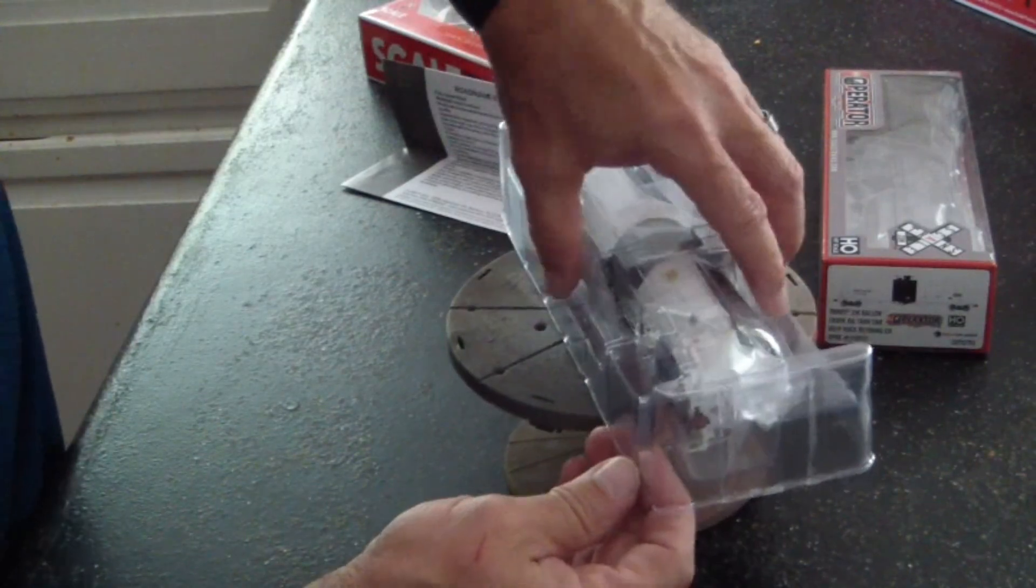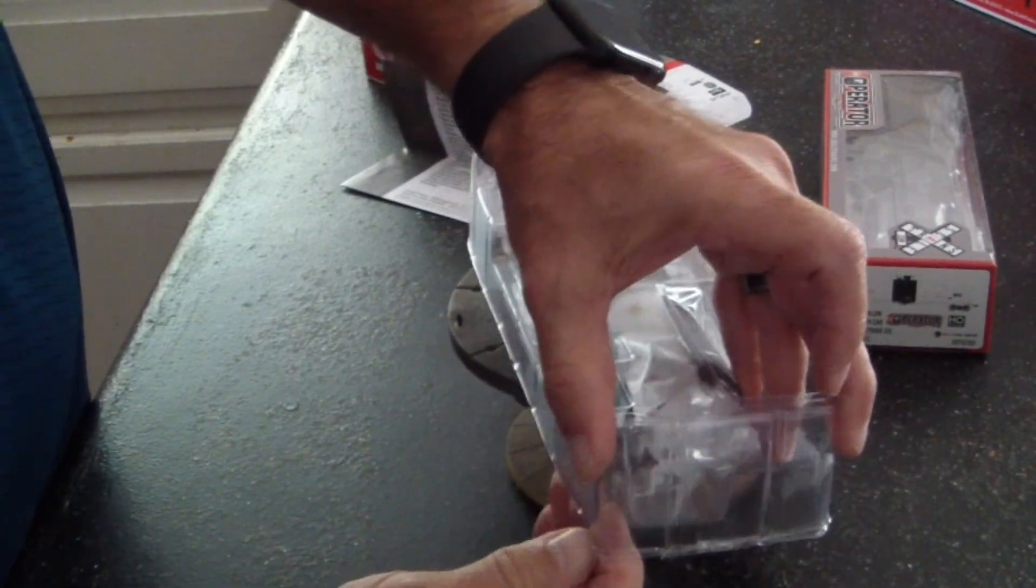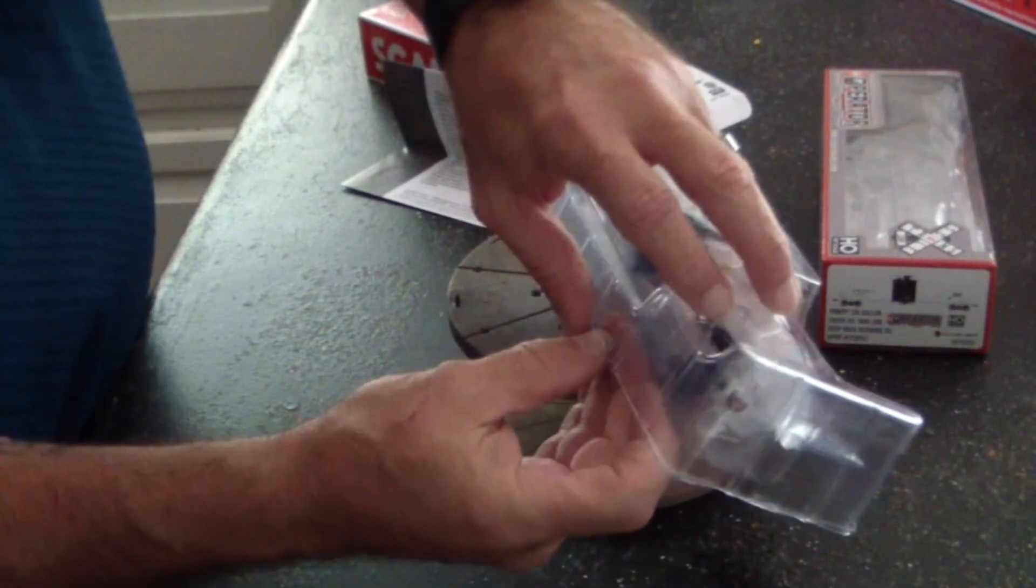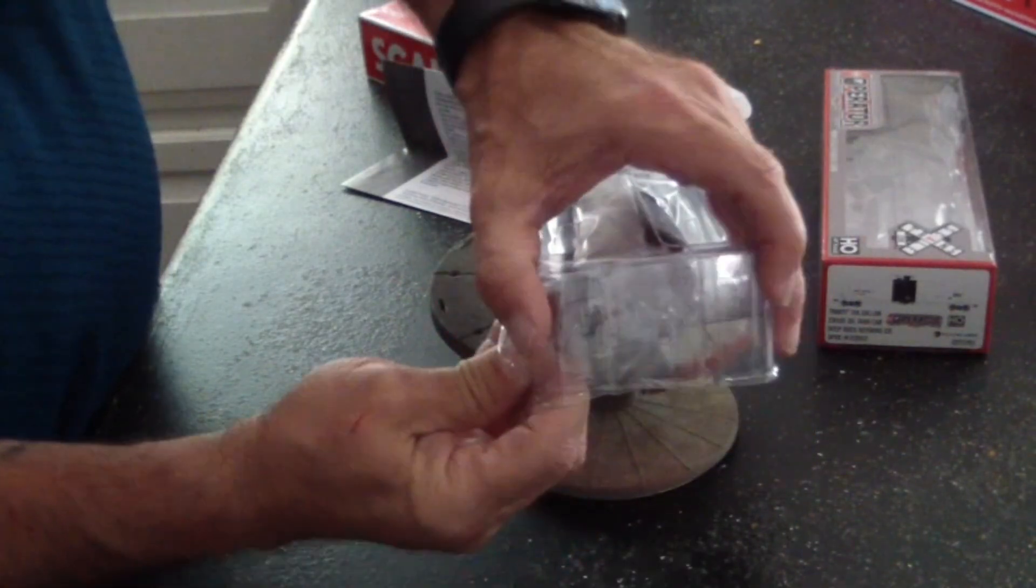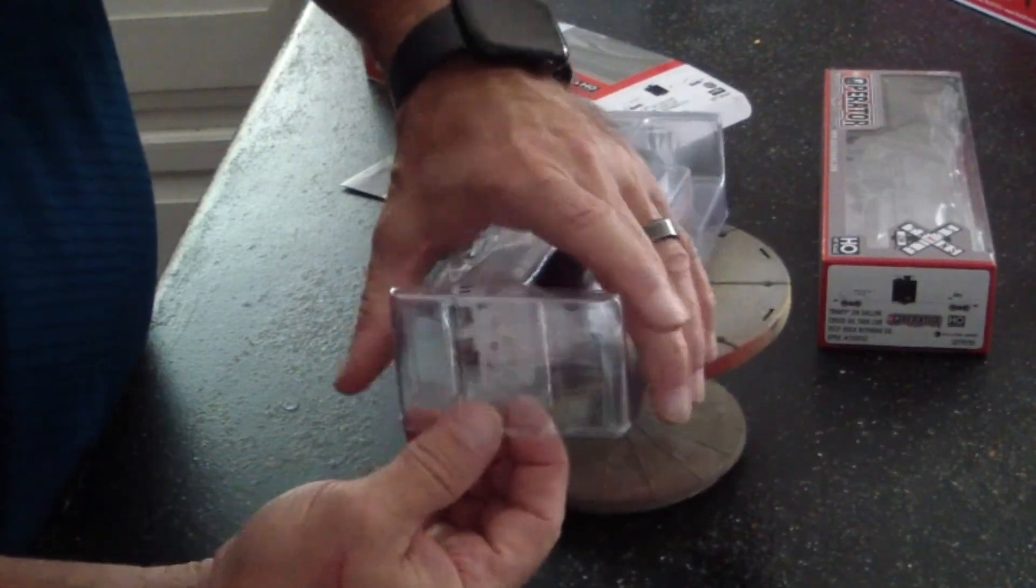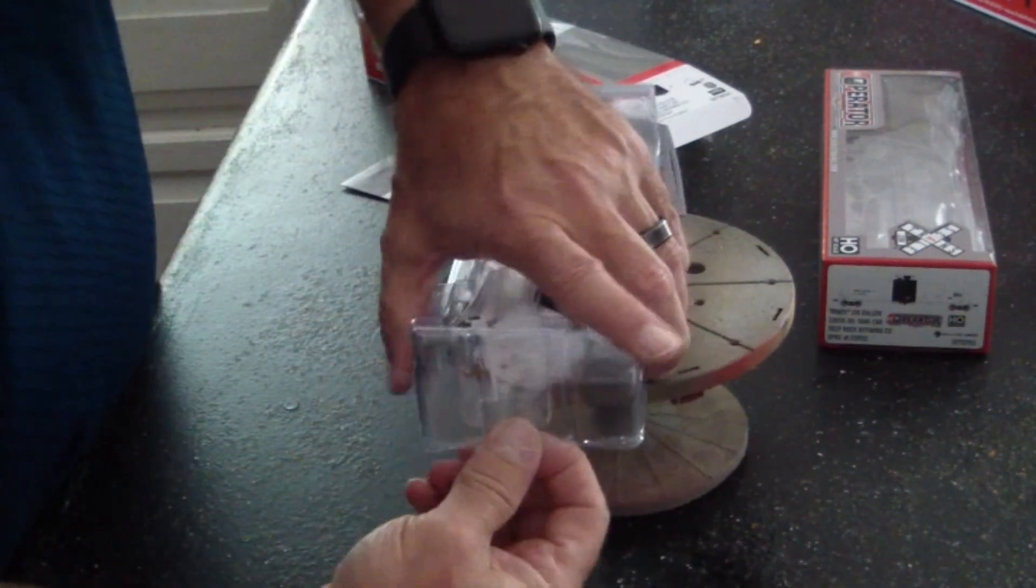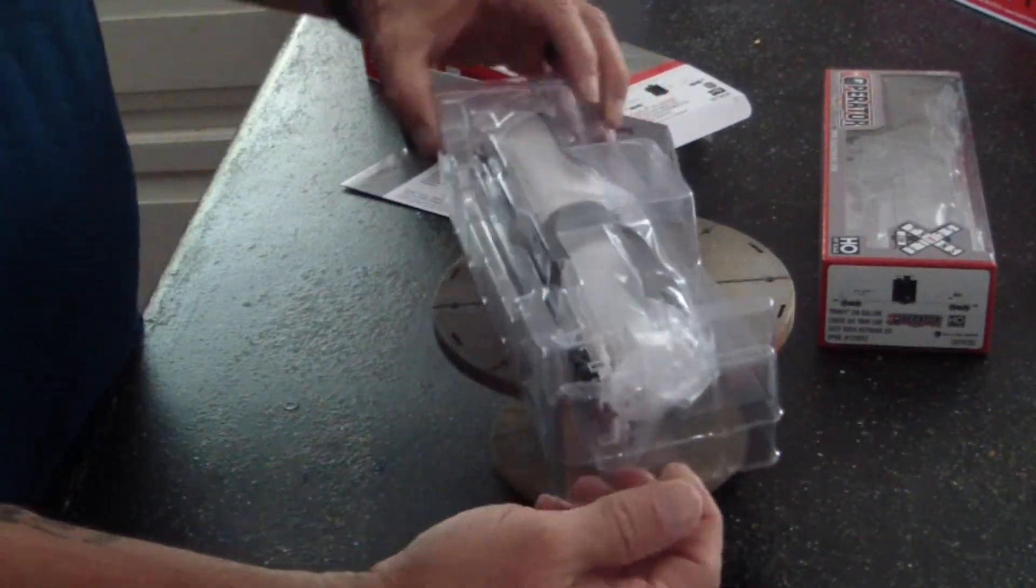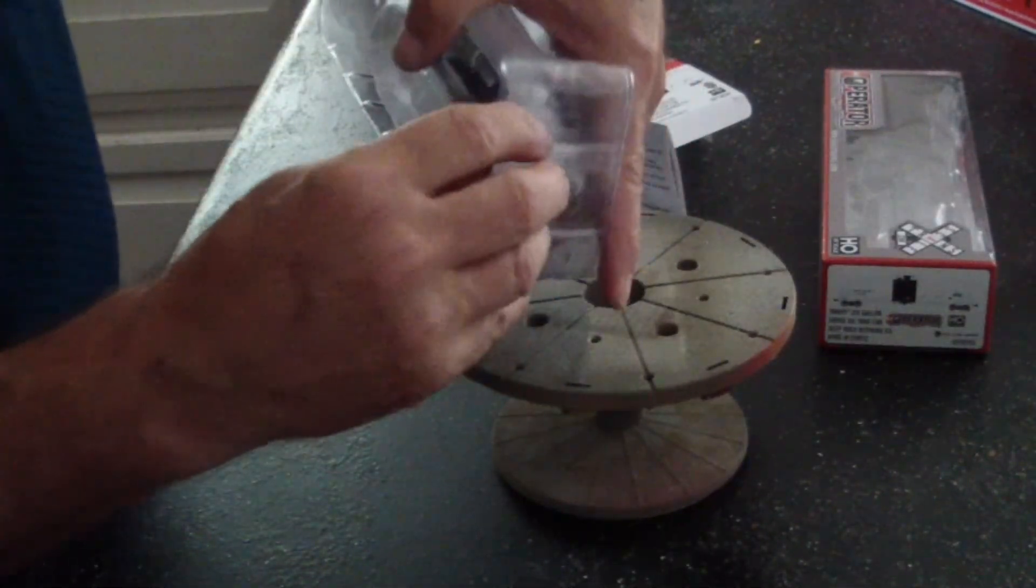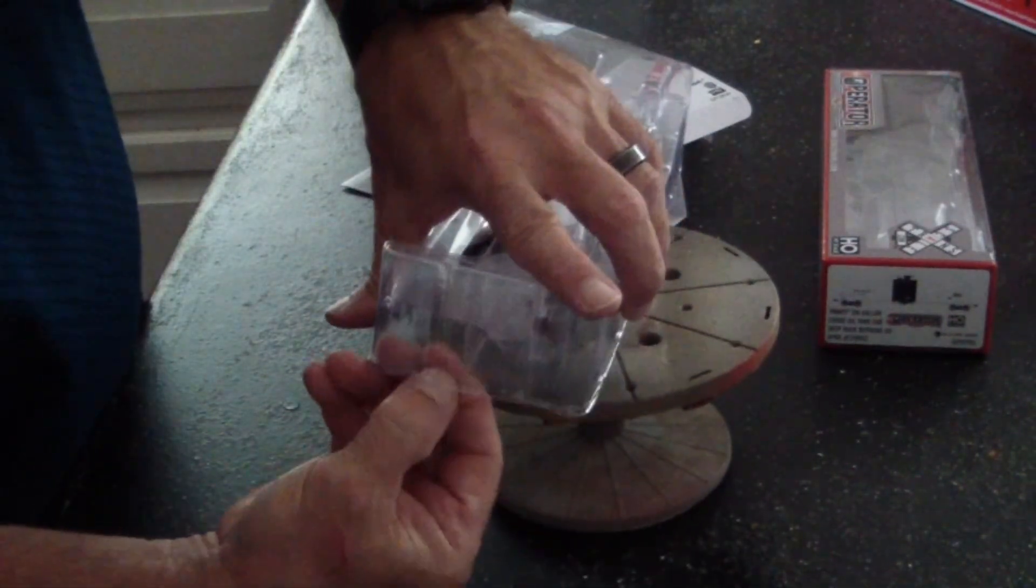Now I just have to figure out how they have this blister pack. There we go. Okay, now I want to do it easy so the car doesn't go flying. These are going to be on my oil refinery area on the way out. And of course they have it taped, that's why I'm struggling. There we go. Now get it open on the other side.